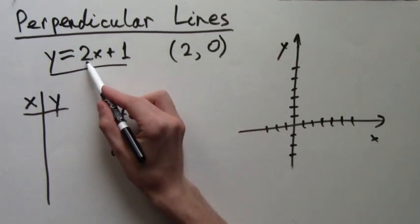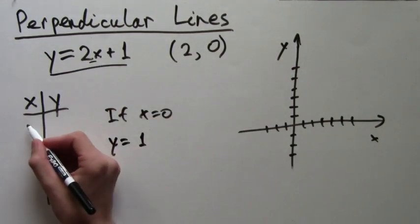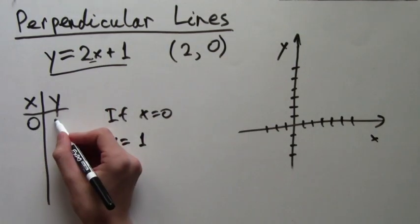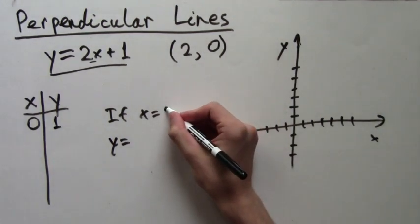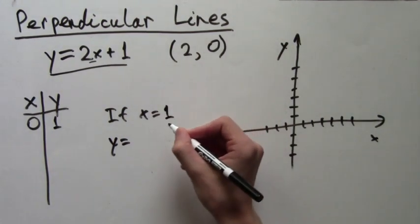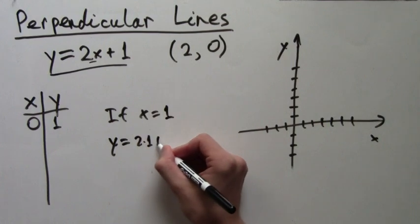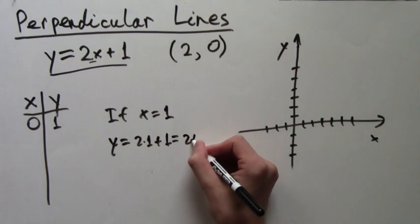Of course, if x is 0, then y equals 1. You can also just remember this as the y-intercept. If we plug in x equals 1, we get y equals 2 times 1 plus 1, which is just 3.